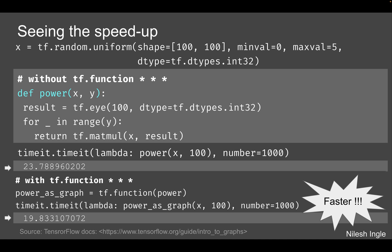Here is an example of how fast it can go. We have x initialized with tf.random.uniform, then a function called power which takes two input arguments x and y. We have a result variable and a for loop which returns the dot products of x and the result. Below, we time it using the timeit module with a lambda function that calls power to perform the dot product, with number set to 1000 iterations. The execution time for the plain Python version is 23.